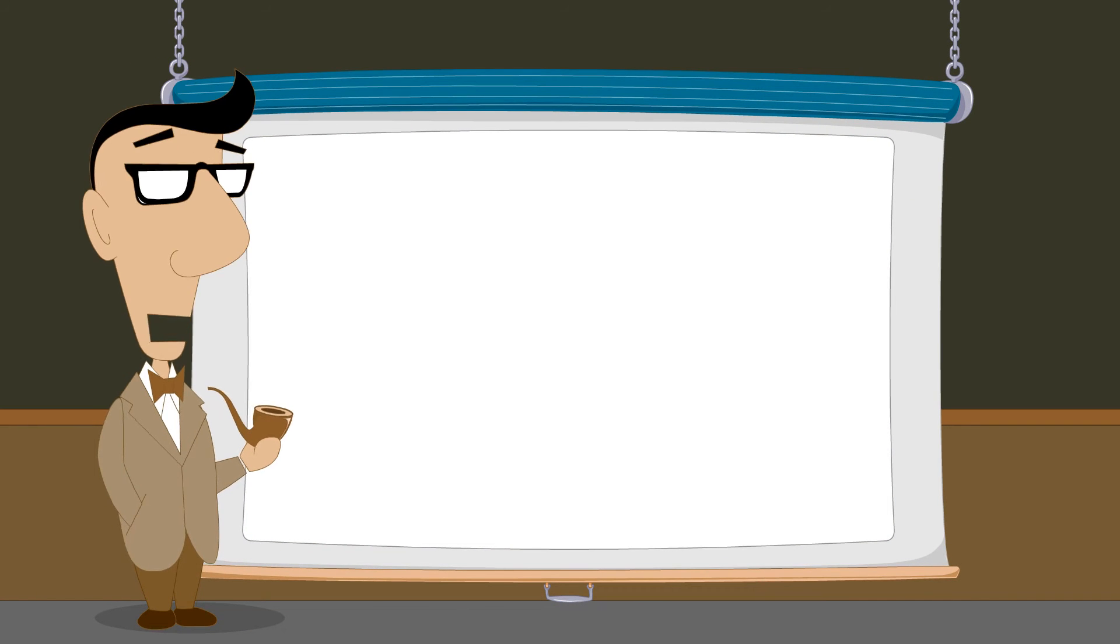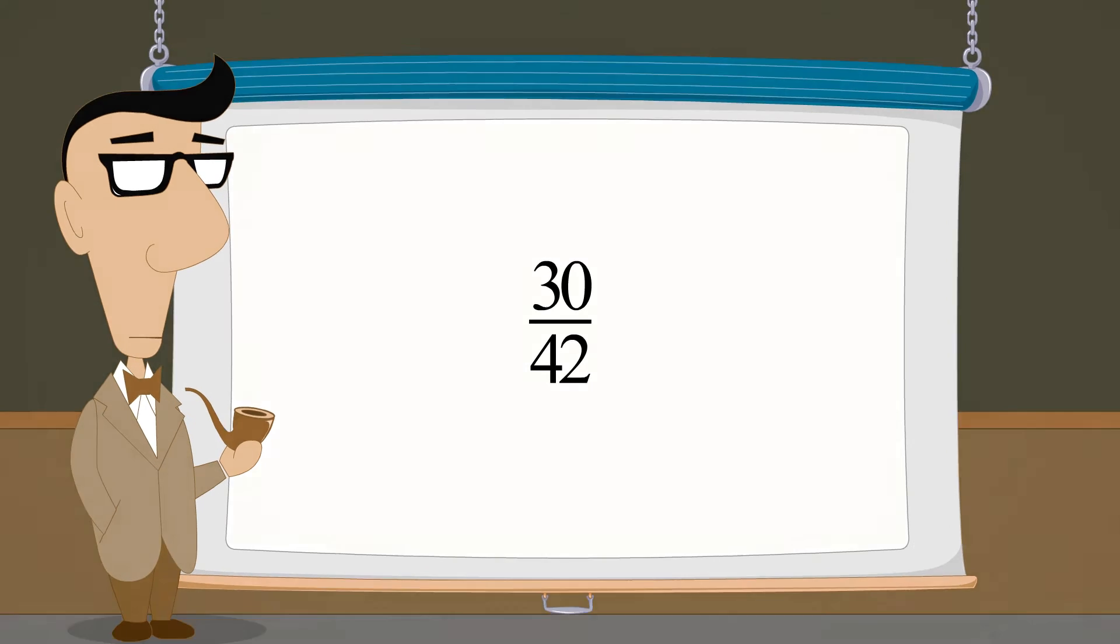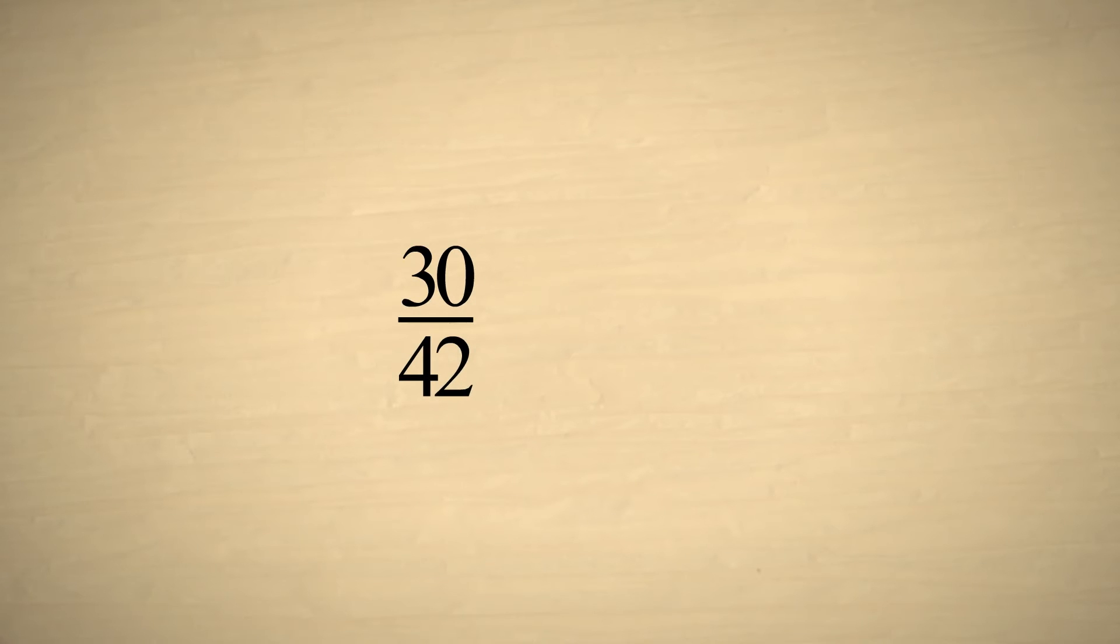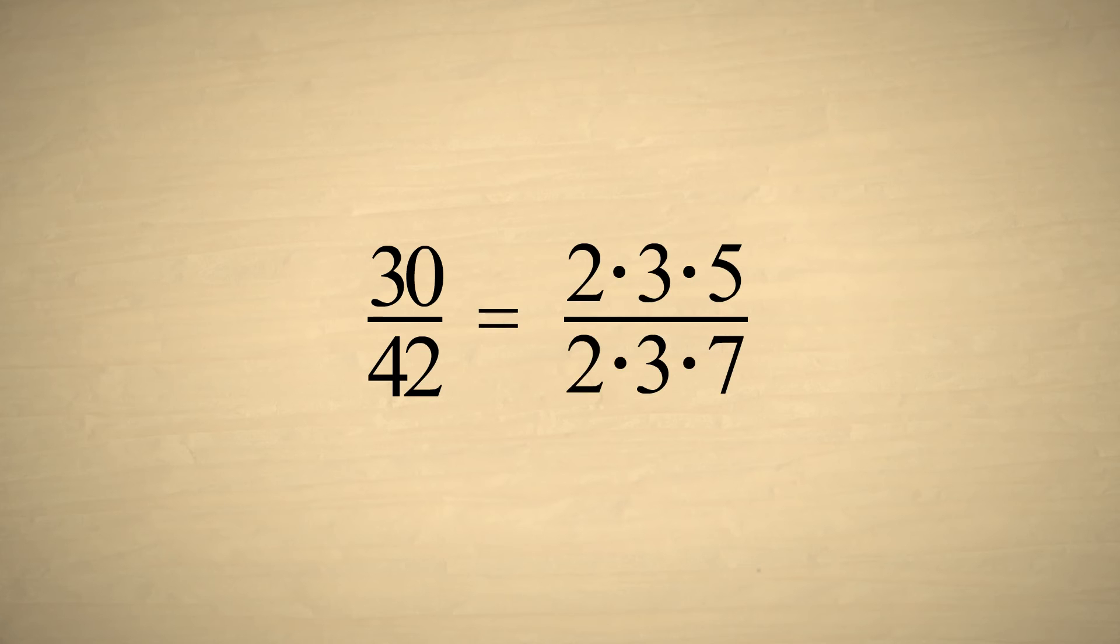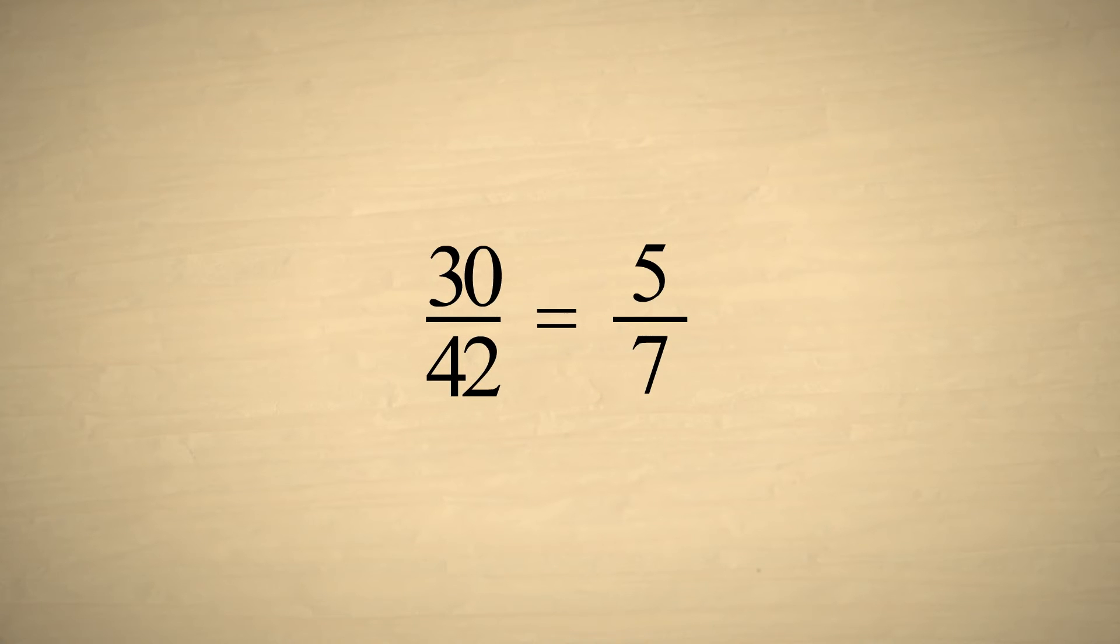As another example, let's simplify the fraction thirty-forty-seconds. Factoring the top and bottom, we see that they both have a factor of two and a factor of three in common. After cancelling out the factors of two and three, we are left with five-sevenths.